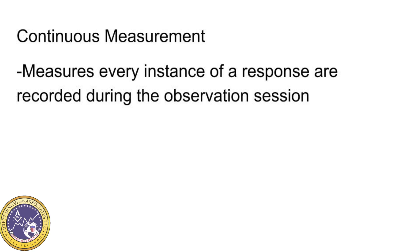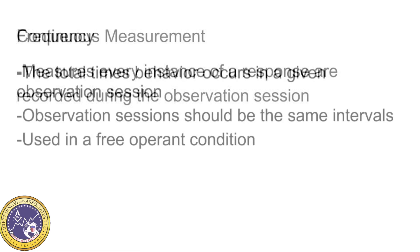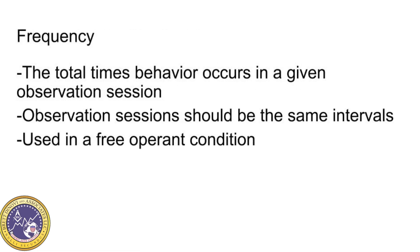Continuous measurement means that every instance of a response is recorded during the observation session. One example is frequency. To collect frequency data you should have the operational definition of what an occurrence of the behavior is. Frequency is the total times behavior occurs in a given observation session. The observation session should be the same intervals, and this type of data collection will be used in a free operant condition.